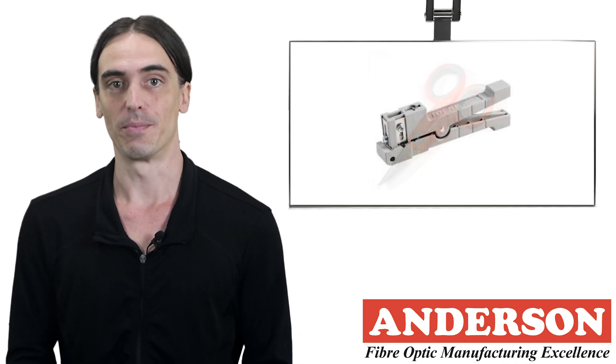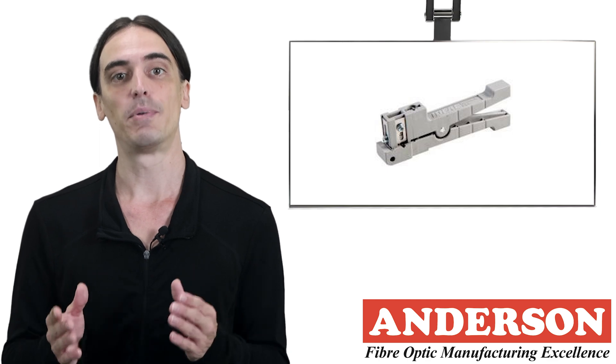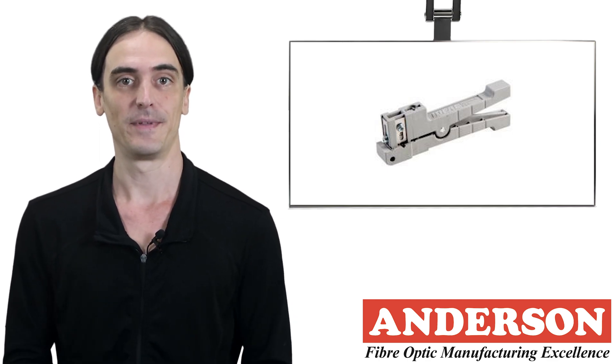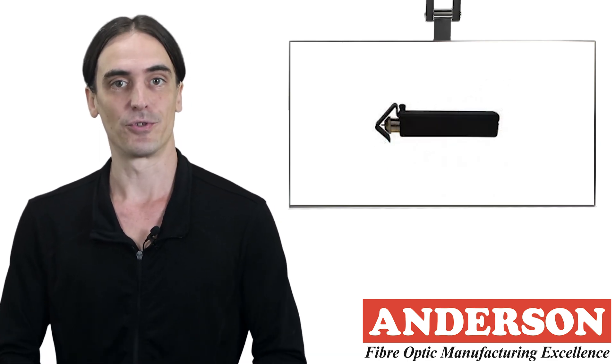There's also a buffer tube stripper. This tool is used to remove the buffer tube in loose tube cable. Then we've got the rotary cable stripper. This tool is used to cut the cable jacket, or to slit the jacket for removal.